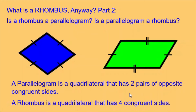The definition of a rhombus is a quadrilateral that has four congruent sides. Our blue rhombus follows that rule, but this green parallelogram does not. So the answer to the question, is a parallelogram a rhombus, is not necessarily. Most parallelograms are not rhombuses because they do not have four congruent sides. But since all rhombuses are parallelograms, some parallelograms are also rhombuses. Is a rhombus a parallelogram? Yes. Is a parallelogram a rhombus? Sometimes, but not necessarily.